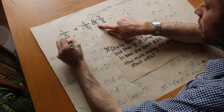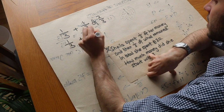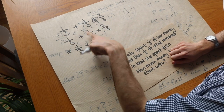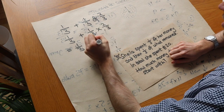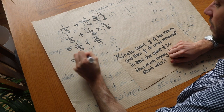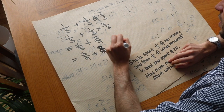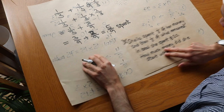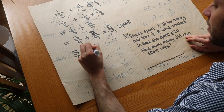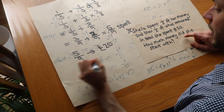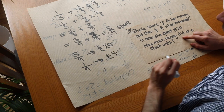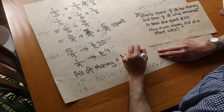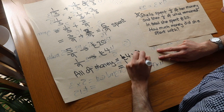Remember, the word 'of' means multiply. So that's a third multiplied by two-thirds. In total she spends a third plus a third times two-thirds: one times two is two, three times three is nine, so that's a third plus two-ninths, which is three-ninths plus two-ninths, giving five-ninths in total. Five-ninths of her money was £20, so one-ninth is four pounds, and all of her money is four times nine which is £36.